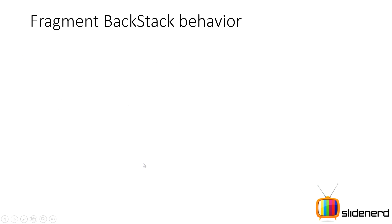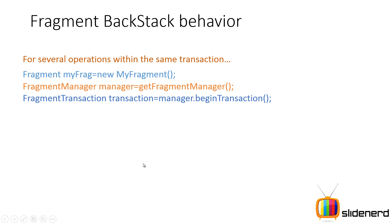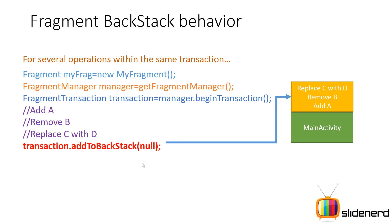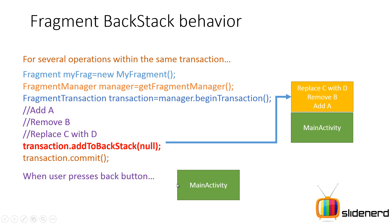Now let's talk about multiple operations and what happens with the backstack. For several operations, consider: add A, remove B, then replace C with D — three operations — and then call transaction.addToBackStack(null). When you say addToBackStack, it considers all operations within the same transaction object as a single entry in the backstack. So when the user presses the back button, all three operations are undone at the same time. This is a good scenario for tablet application development where you have multiple fragments and want to undo all of them simultaneously.